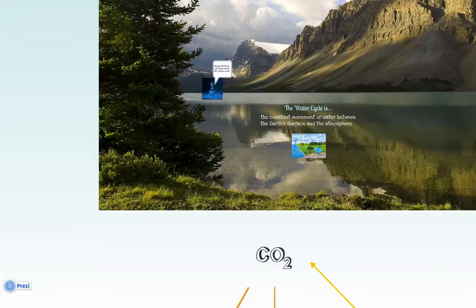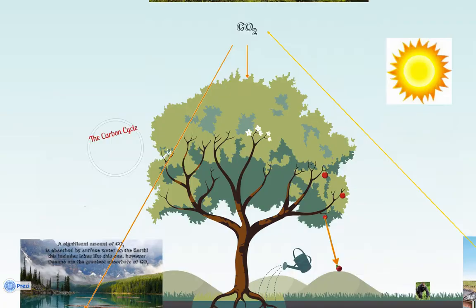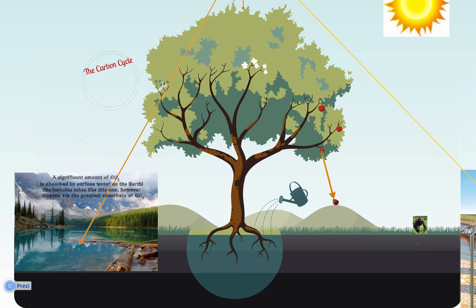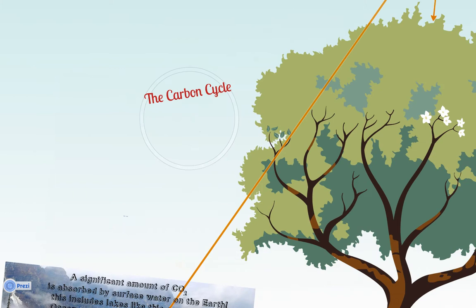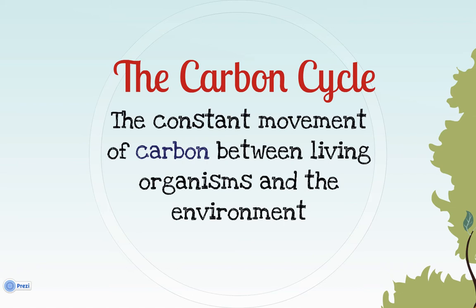Alright, today we're talking about the carbon cycle. Before we start, does anyone have any idea what the carbon cycle might be? The definition I want you to write down in your notes — the same one that's in your books — is very simple: the carbon cycle is the constant or ongoing movement of carbon between living organisms and the environment. It's the recycling of the carbon atom. It doesn't get used up and destroyed; it is constantly around, it just changes form.